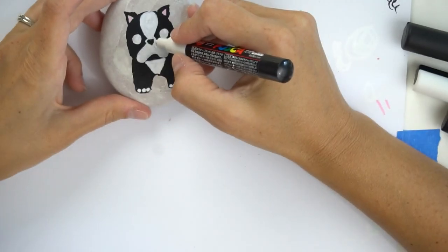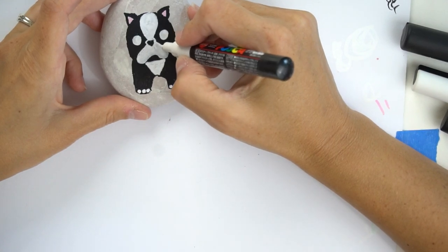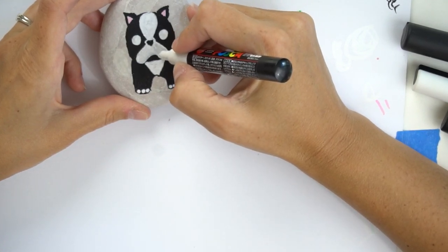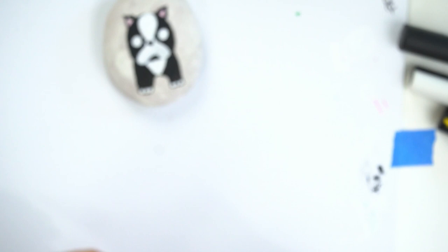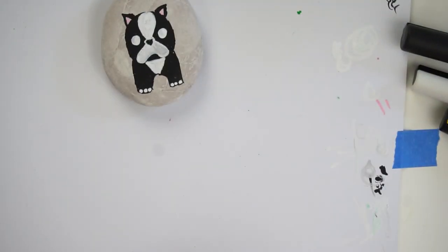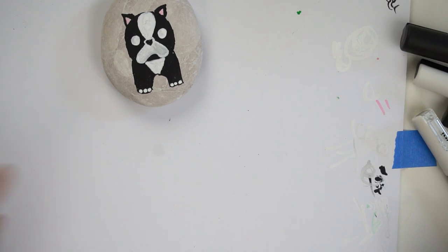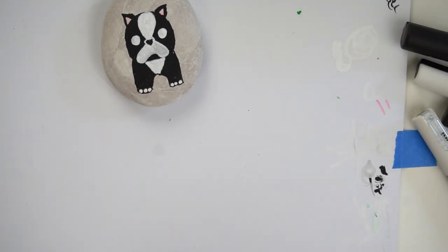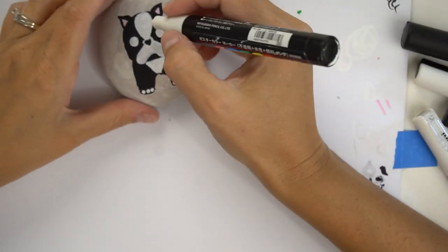There we go! Now he's really starting to look like a Boston Terrier, isn't he? We're going to let this coat of white dry and we're going to add a second coat of white on top of it.